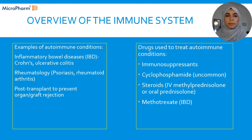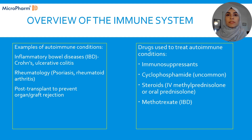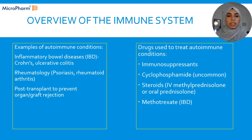So IBD — inflammatory bowel diseases like Crohn's and ulcerative colitis. There are also rheumatological conditions like psoriasis or rheumatoid arthritis. And we're also going to look at when patients get given a transplant — an organ transplant or another tissue — when their body starts rejecting it and we give medications to suppress that rejection.